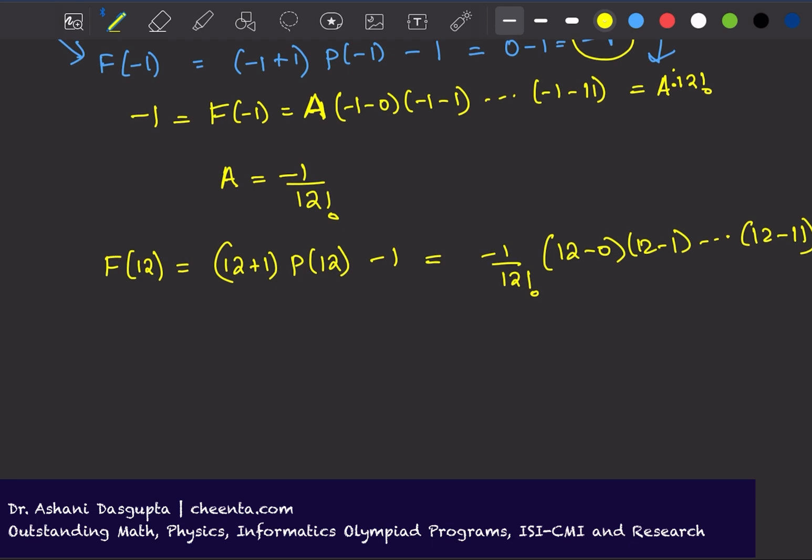What do I get? I get 13 times P(12) minus 1 equals negative 1 by 12 factorial times, this is 12, this is 11, and so on up to 1, so I get another 12 factorial.